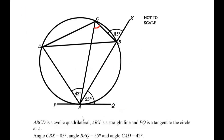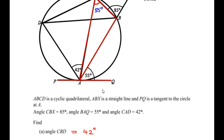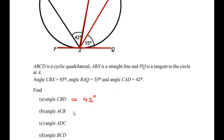In our example, we have tangent PAQ and chord AB. The chord makes an angle of 55 degrees with the tangent, and the same chord makes an angle at point C in the major segment — the alternate segment. By the alternate segment theorem, the angle made by the chord in the alternate segment is also 55 degrees. So angle ACB equals 55 degrees.